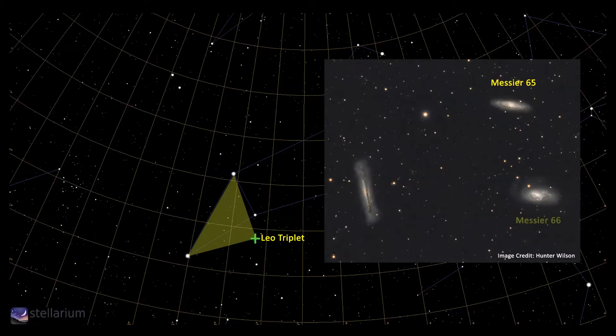Next to it, Messier 66 is brighter at magnitude 8.9, and another spiral galaxy, this time with a more favorable tilt, so large scopes may tease out the spiral arms and dust lanes, but even smaller scopes should see a nice bright core.